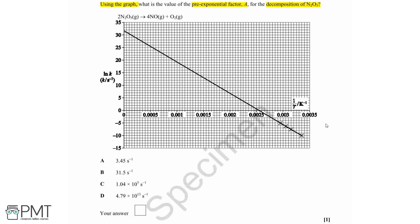And here we've got a graph where we've got ln k plotted on the y-axis and 1 over T plotted on the x-axis.